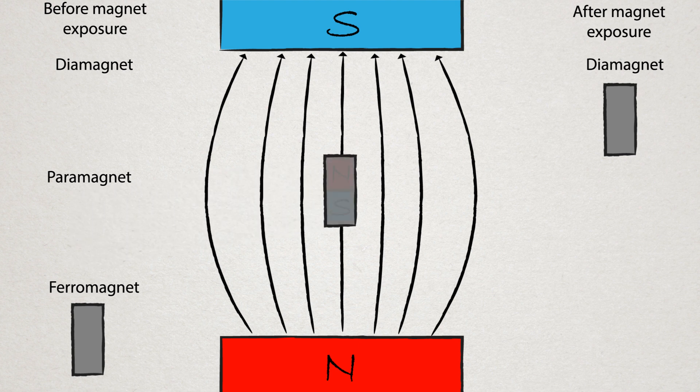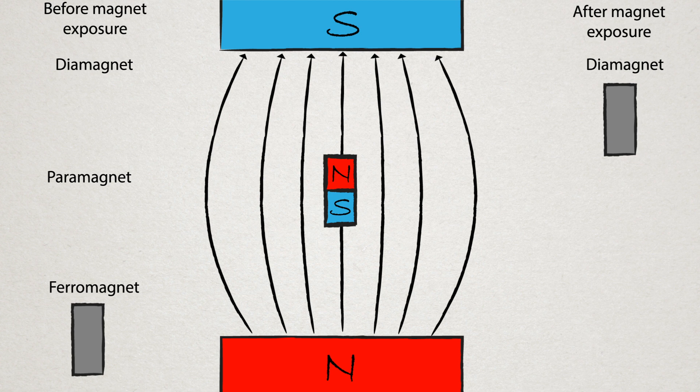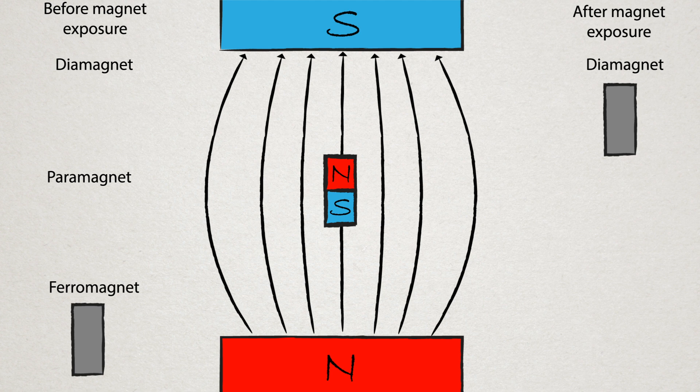When paramagnetic materials are exposed to a magnetic field, they align with the magnetic field. Any diamagnetism that the atom has is overcome by the far stronger paramagnetic effect, and the material increases the magnetic field.